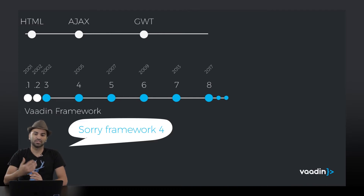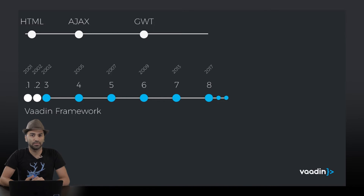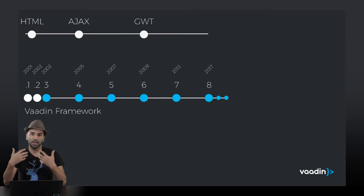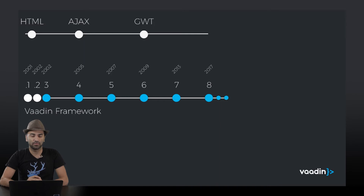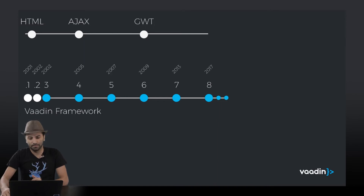And then starting from framework version 6, we started to use the JWT, which is a way to write components for the front-end, but still on Java.